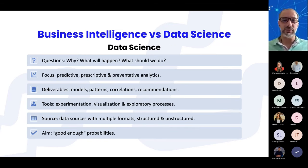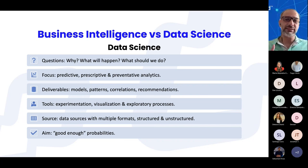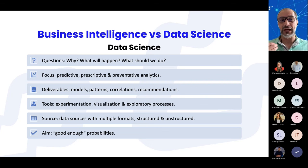About data science — the questions it works with are: why? What will happen? What is most likely to happen? And what should we do? The focus is on predictive, prescriptive, and preventive analytics. Prescriptive analytics is about what we should do to achieve a goal or outcome, while preventive analytics is about what we need to do to avoid an undesired outcome.